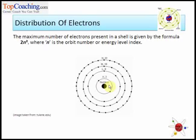Bohr named those orbits as energy levels and they are represented by K-shell, L-shell, M-shell and N-shell.